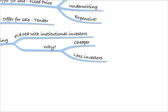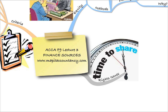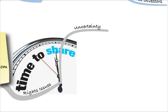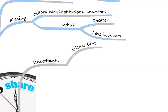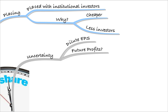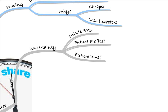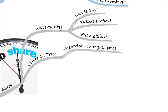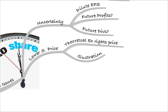Go back and make sure you understand those methods if you have any problems. With rights issues, there's uncertainty — we're going to have a diluted EPS because there will be more shares. It also raises questions about future profits: why do we need to do a rights issue? And future dividends will be split across more shares, causing further uncertainty. All of that uncertainty leads to a lower share price, called the theoretical X rights price. Make sure you know how to calculate it — it's very important.